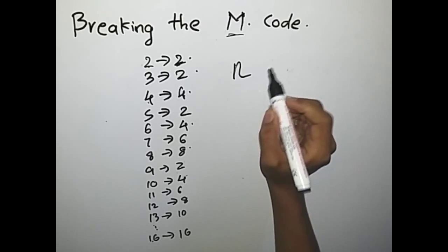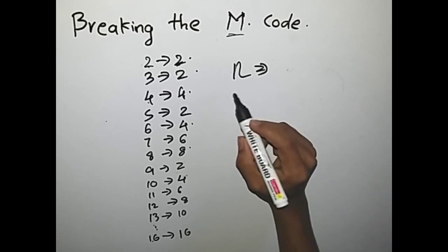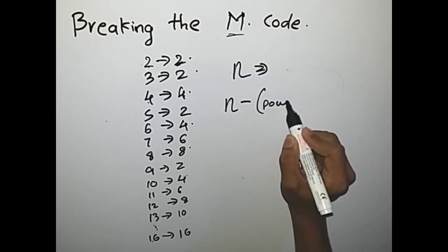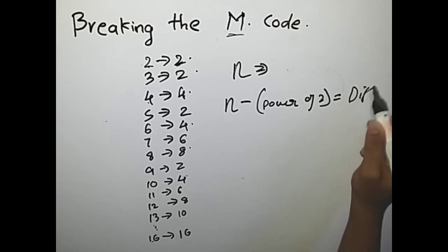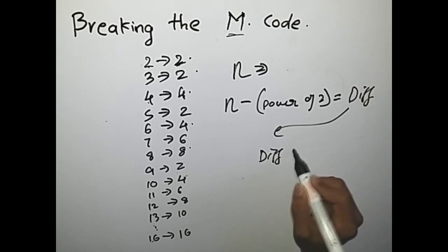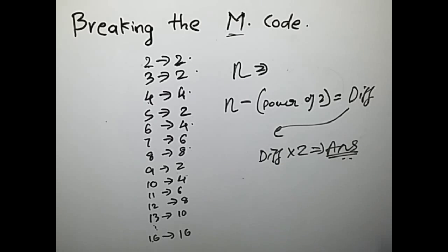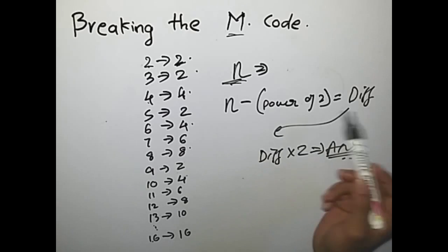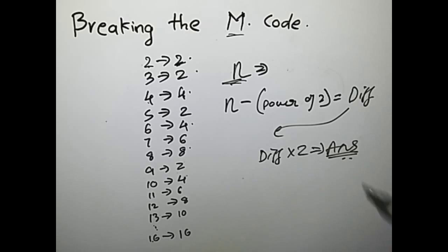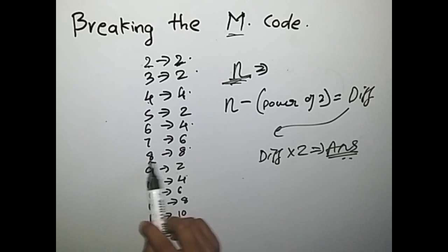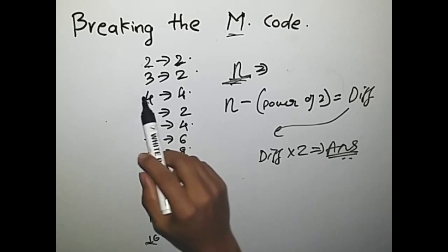So what we have to do: get n from the user, find the nearest power of 2 less than n, take the difference, and multiply the difference by 2 — that's the answer. This is the case when n is not a power of 2. If n is a power of 2, just print n as it is. For example: n equals 8, answer is 8; n equals 16, answer is 16; n equals 4, answer is 4.